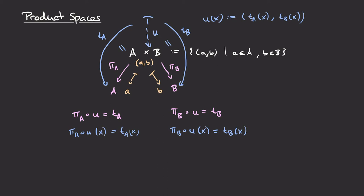We want the product space between topological spaces A and B to be universal in the following sense: it should have continuous maps π_A and π_B projecting down to the spaces A and B, and moreover for any other topological space T with continuous maps to A and B, there exists a unique continuous map from T into the product space. Since we keep the Cartesian product as the underlying set, we only need to determine what topology to put on it.